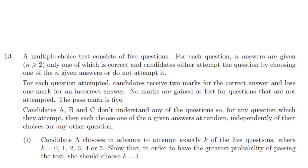Okay, so we've got a multiple choice test with five questions, each with N answers, at least two answers for each, and just one being correct. The questions can either be attempted or not, but if you do attempt the question, you get plus two marks for a correct answer, but you lose one for an incorrect answer, and you score zero for no attempt. So there's no penalty for missing a question out entirely.